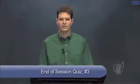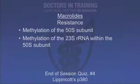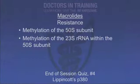Question 3: What is the mechanism of action of linezolid? Linezolid binds to the 50S ribosomal subunit and interferes with formation of the 70S bacterial ribosome initiation complex. Question 4: What is the primary mechanism by which bacteria become resistant to macrolides? Methylation of the 50S ribosomal subunit — specifically methylation of the 23S ribosomal RNA within the 50S subunit.